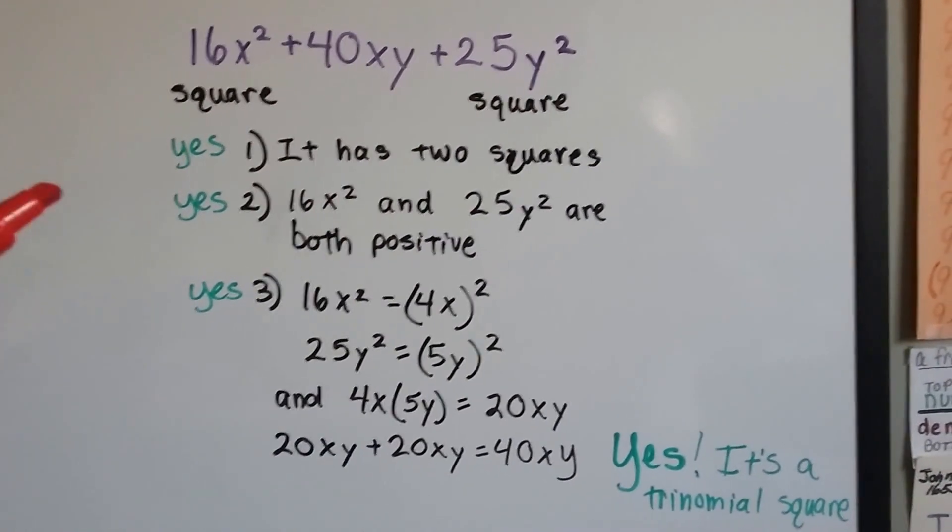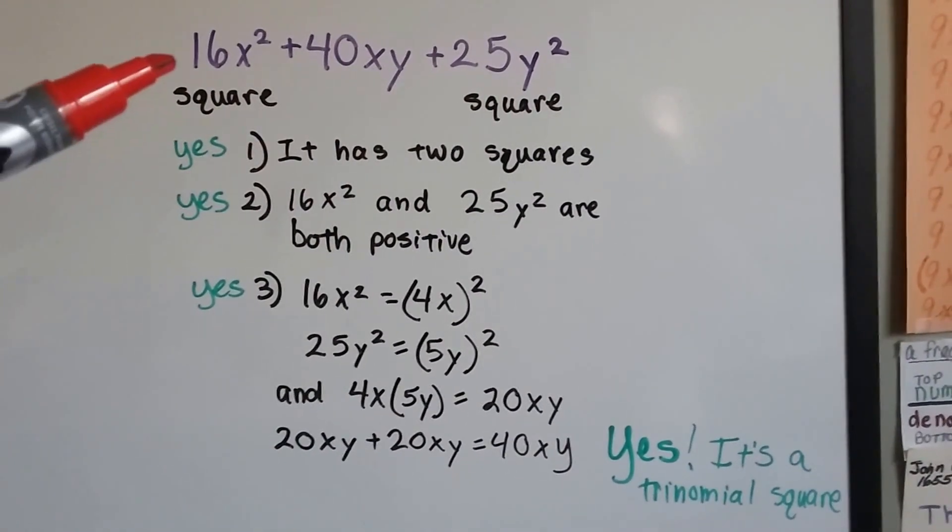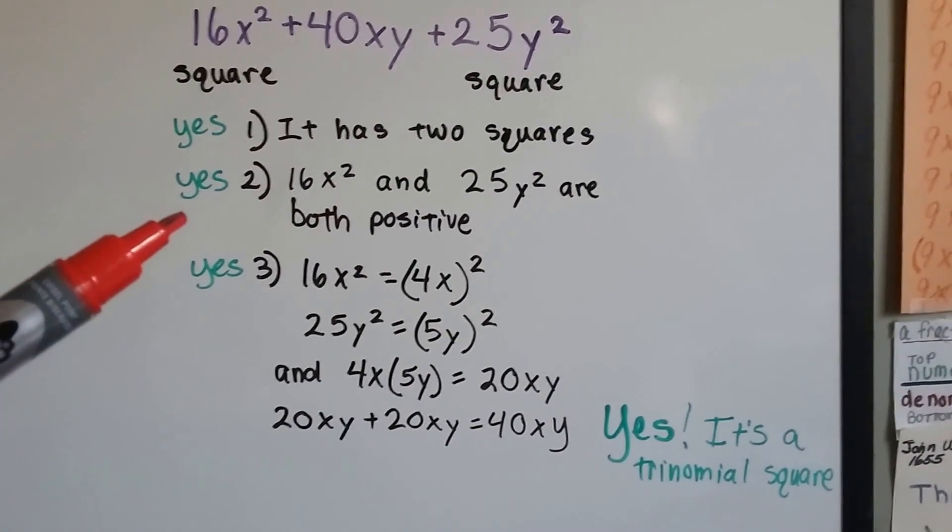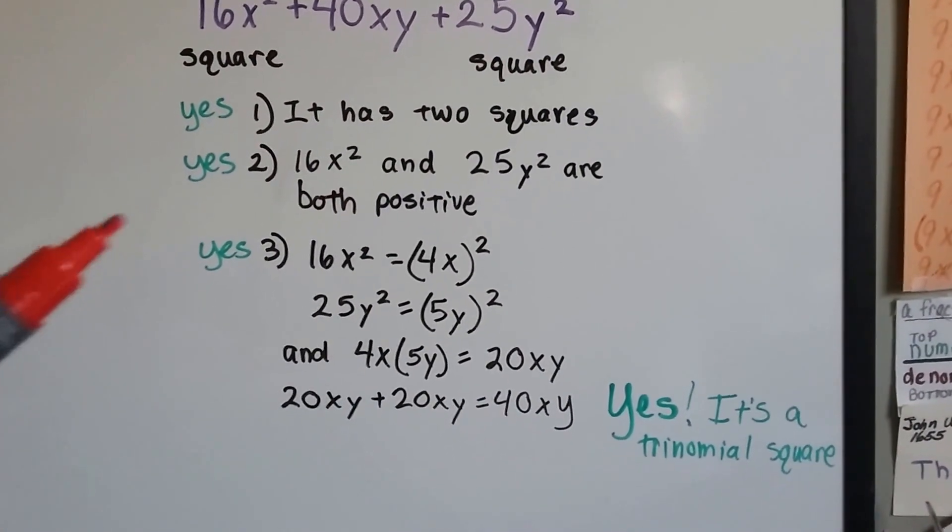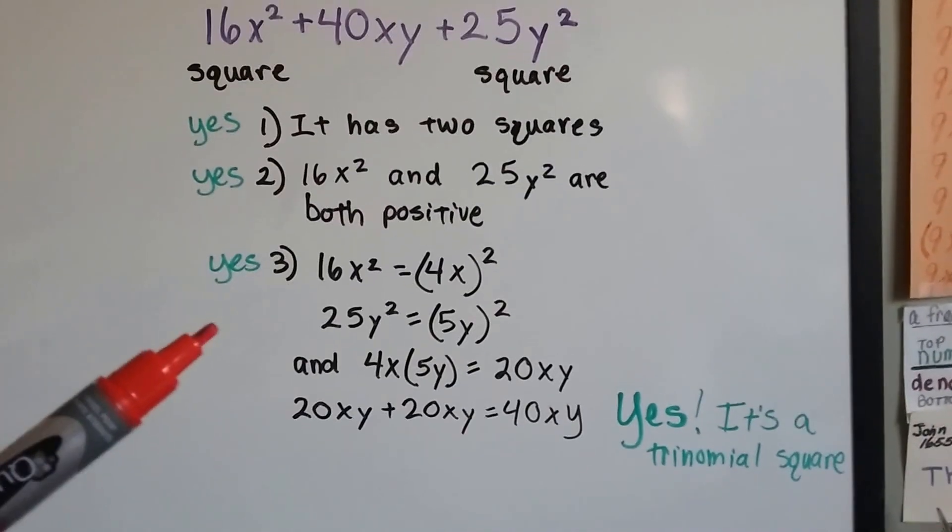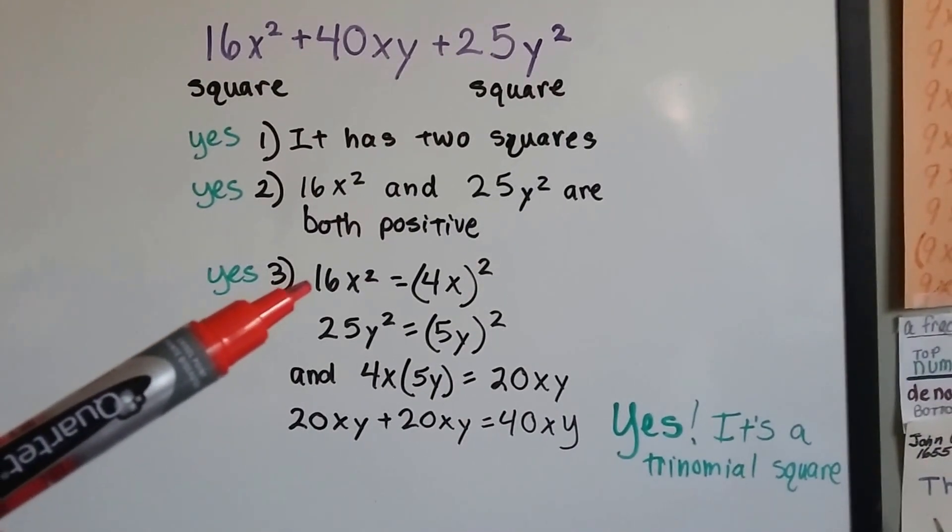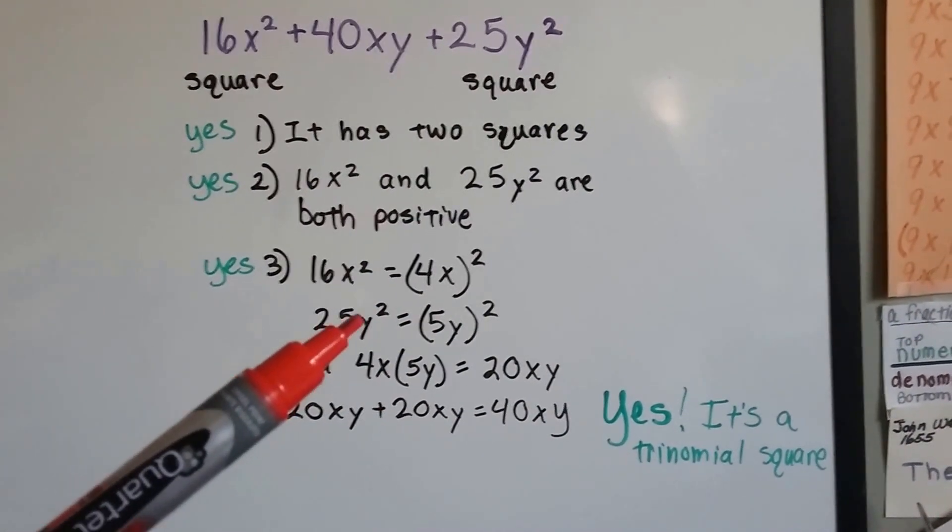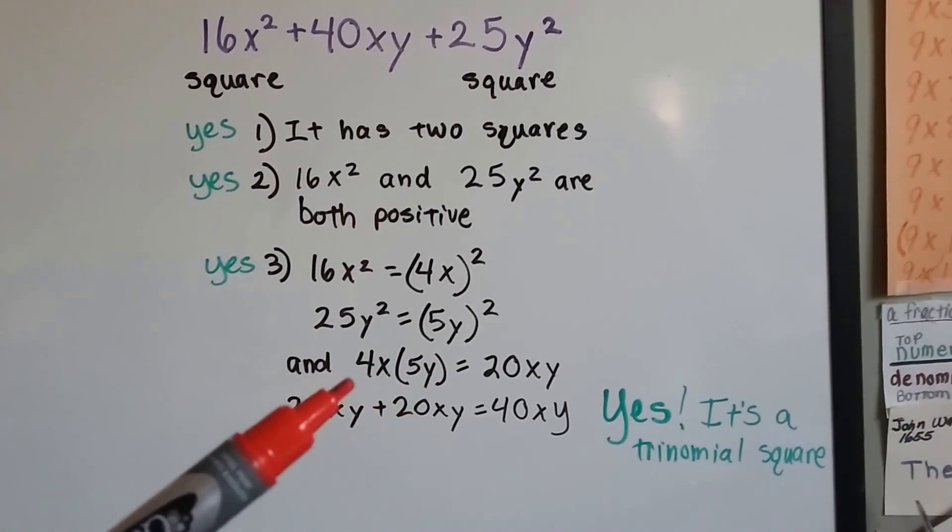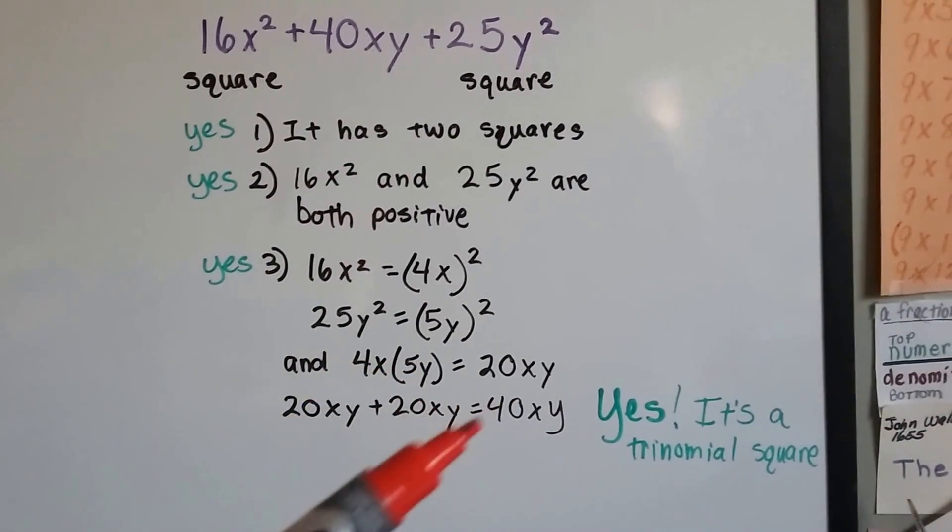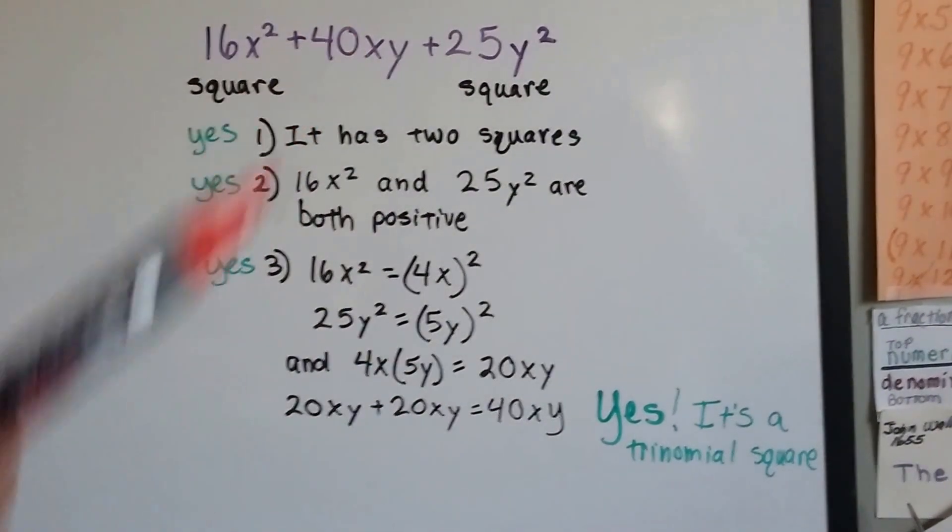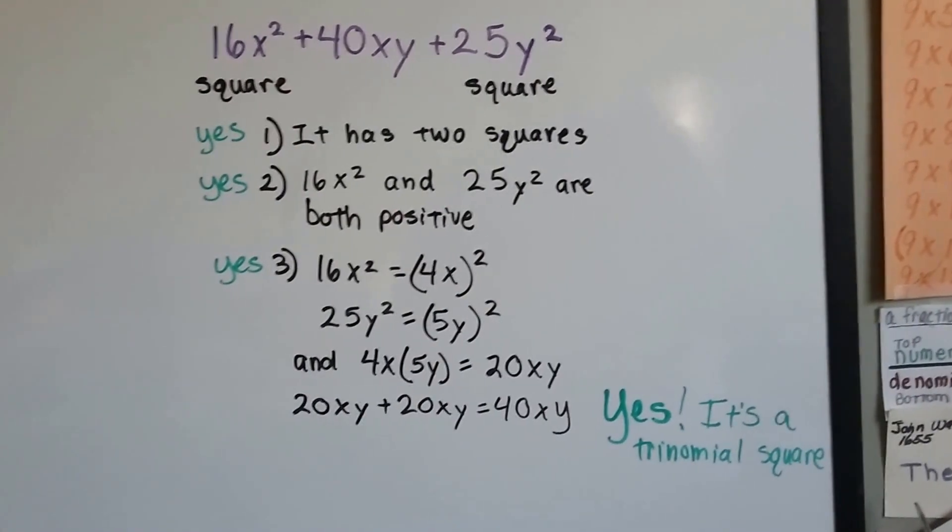Yes. It fulfills the conditions. It has two squares, the 16x squared and the 25y squared. The 16x squared and 25y squared are both positive. And when we factor the 16x squared to 4x and the 25y squared to 5y and multiply them together, we get 20xy. And when we double that, we get 40xy, which is the center. So yes, it's a trinomial square.